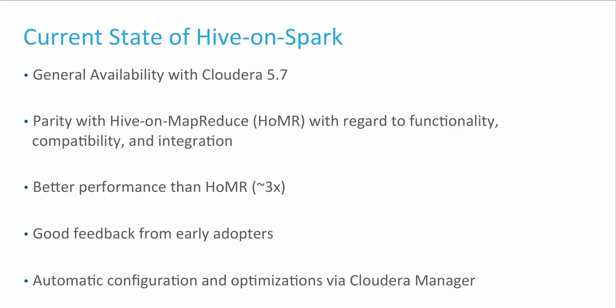Finally, Hive on Spark performs three times better than Hive on MapReduce on average. Our beta customers have reported an order of magnitude better performance on their most SLA-sensitive and long-running queries. This is not surprising as we have made design choices that enhance Hive on Spark's performance for such workloads.